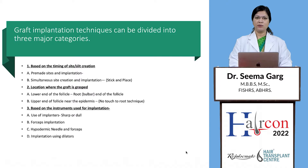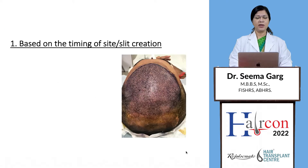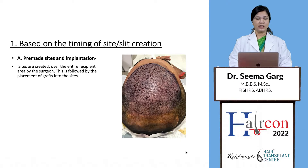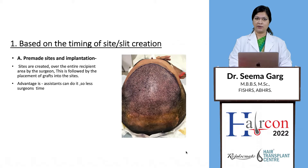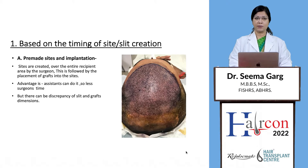Then based on the instrument used — either implanters, forceps, needles and forceps, or dilators. In pre-made sites, the surgeon creates sites over the entire recipient area, followed by placement of the graft into the sites. The advantage is that an assistant can do it, requiring less of the surgeon's time, but there can be discrepancy between the slit and the graft dimension.